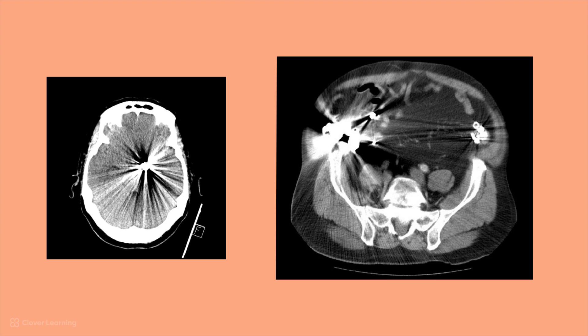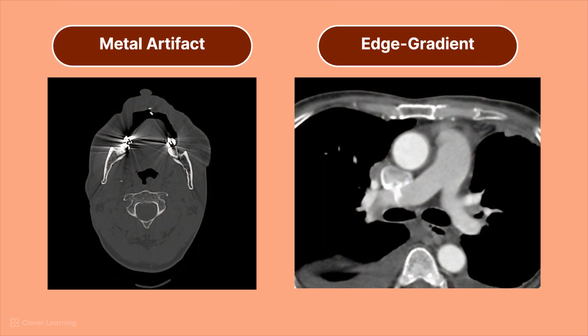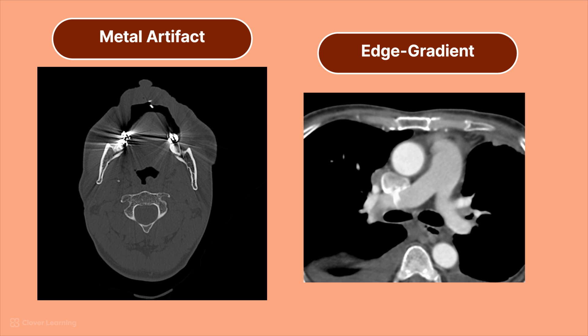There are a few kinds of beam hardening artifact that get their own name: metal artifact and edge gradient artifact. Both are still considered beam hardening artifact. The image on the left shows a dental implant made of metal that has resulted in streaking on the CT image. Because it involves metal, we sometimes just call it metal artifact, but it is a type of beam hardening — that metal implant is absorbing an excessive amount of low-energy photons and confusing the CT algorithm.